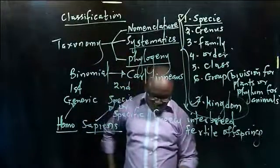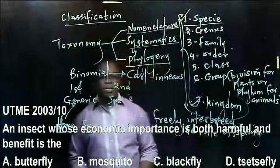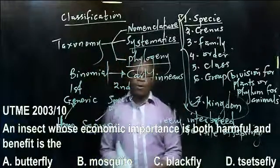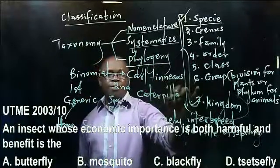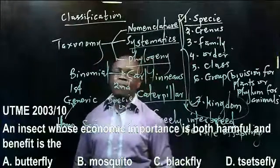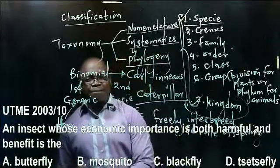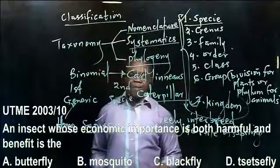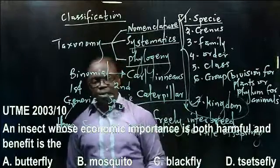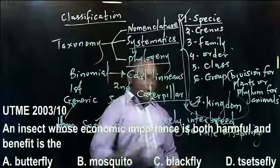The next question was extracted from JAM 2003 No. 10: An insect whose economic importance is both harmful and beneficial. The answer is butterfly. The larval stage — the caterpillar — is destructive, causing severe damage to agricultural produce by eating plant leaves. The adult butterfly, however, is not harmful; it helps in the process of pollination. So the caterpillar stage is destructive to plants, while the adult stage contributes to pollination.